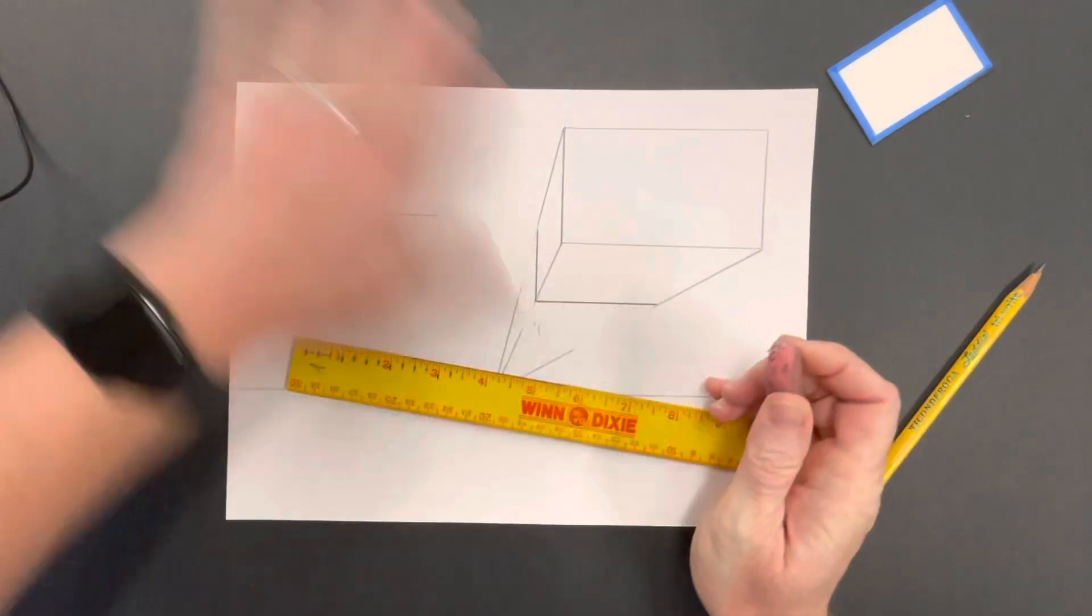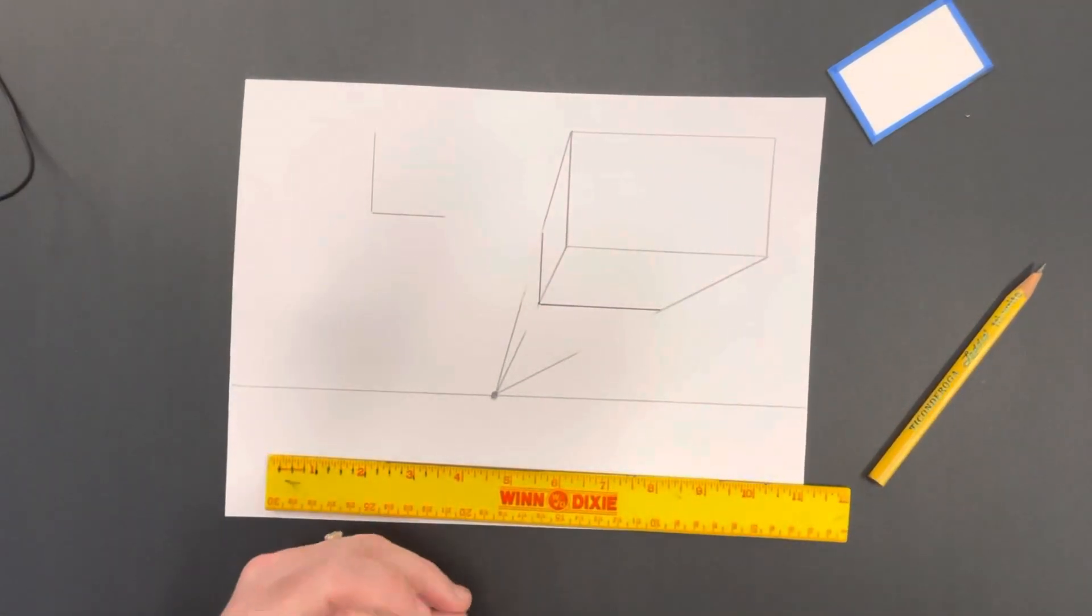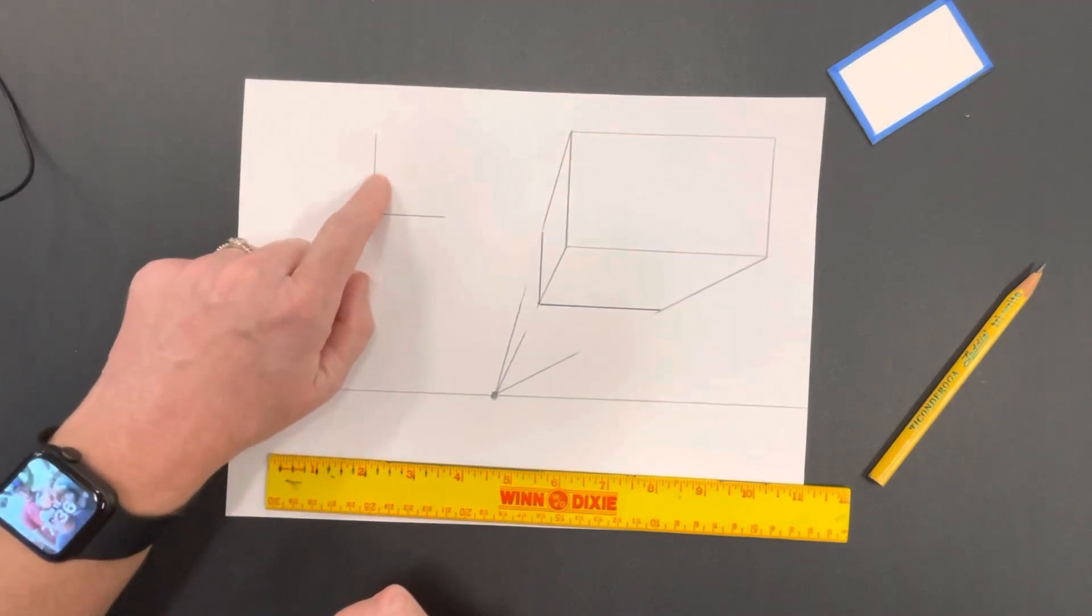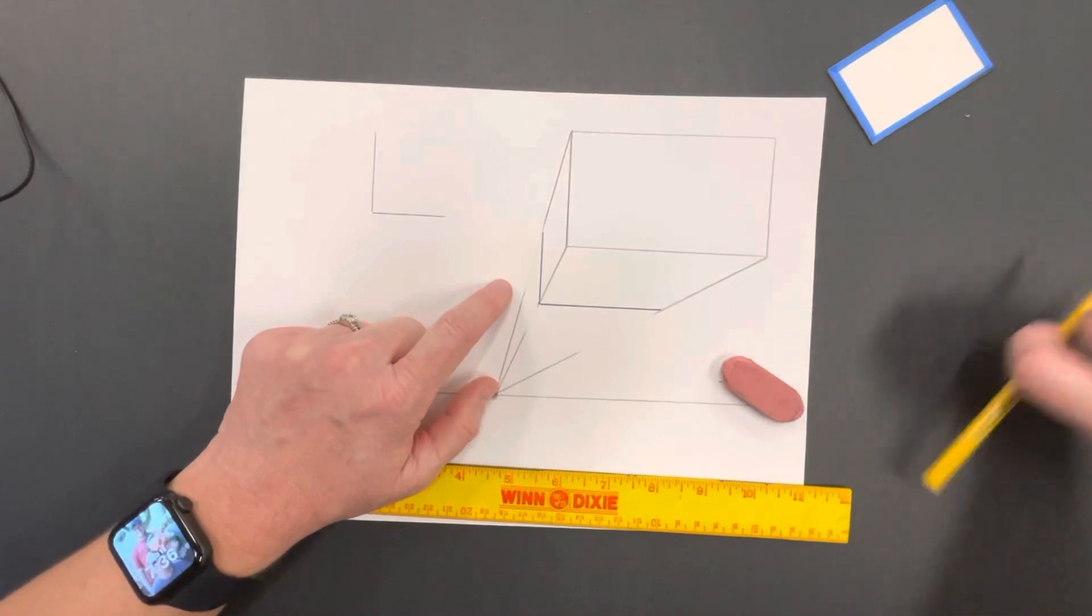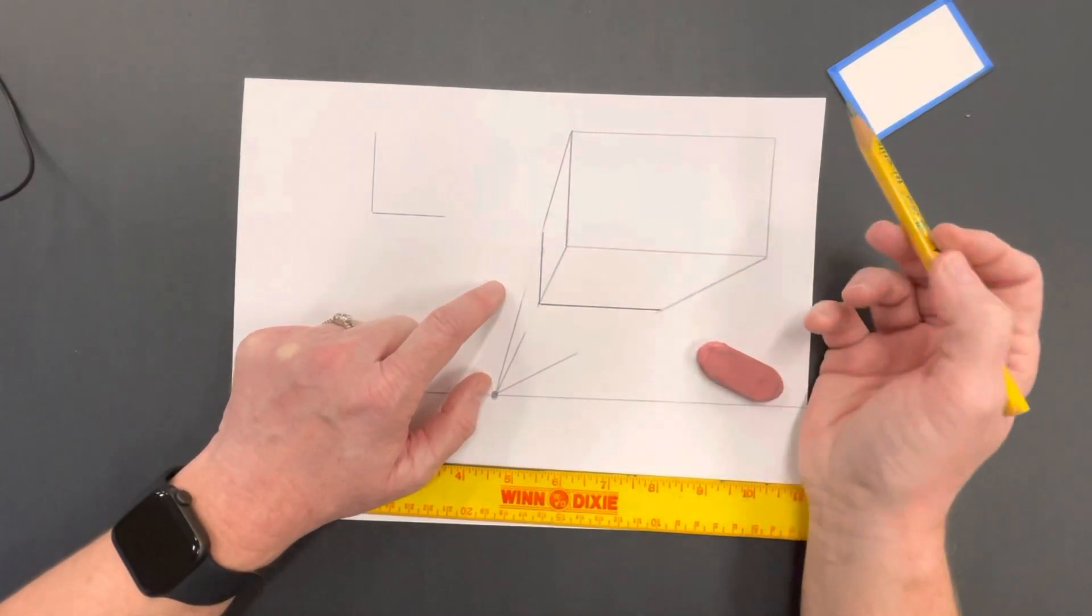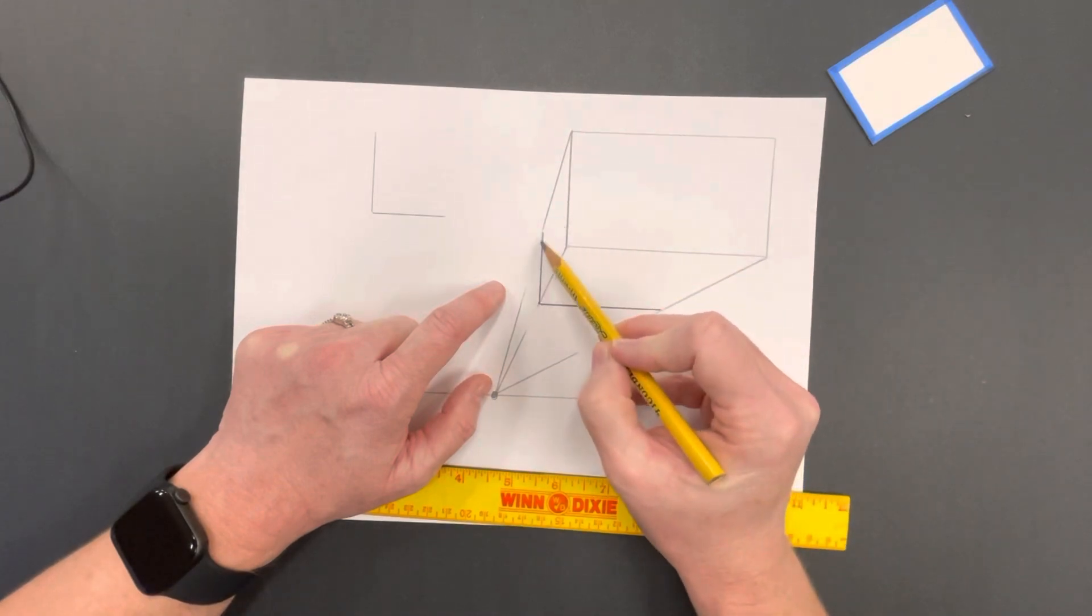And you can see now I have a floating cube. So I want you to try that on a couple of yours. If you want to do all four, do all four, but you need 90-degree angles. Your lines should be parallel to the side that they're on. So if you're over here, it's going to be parallel to this one. This line down here is parallel to this one.